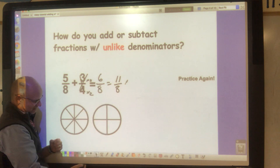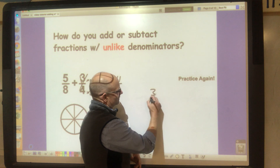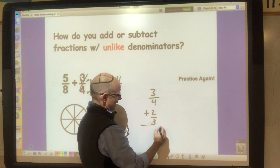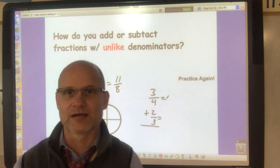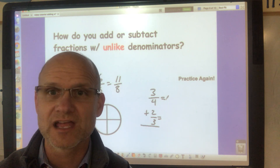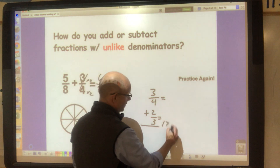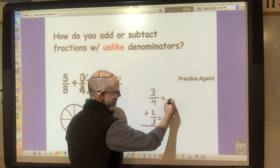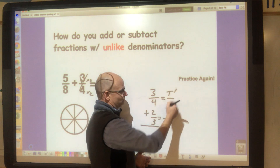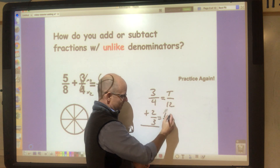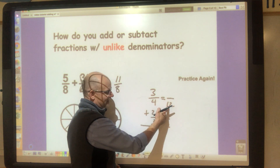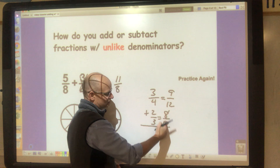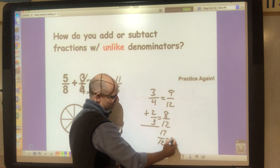Let's try three-fourths plus two-thirds. Find a common unit — twelfths works because both three and four divide into twelve. Three-fourths becomes nine-twelfths (multiply by three), and two-thirds becomes eight-twelfths (multiply by four). Add nine-twelfths plus eight-twelfths to get seventeen-twelfths, which as a mixed number is one and five-twelfths.